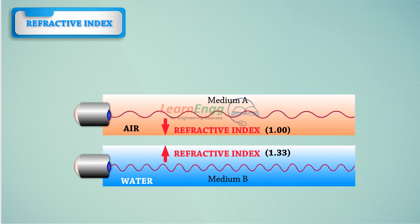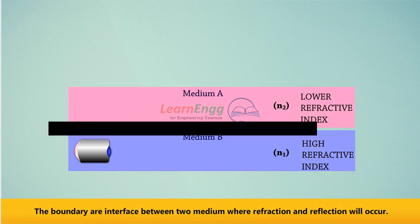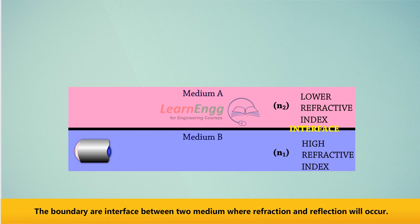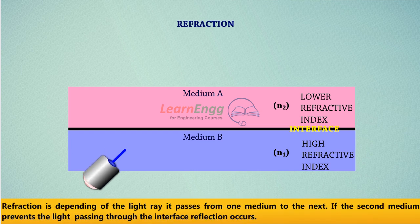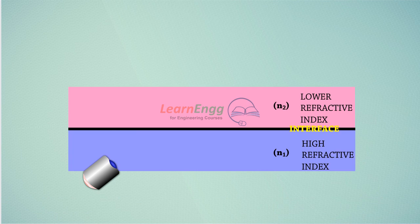A ray propagating through water will travel at a slower speed than in air. The boundary or interface between two mediums is where refraction and reflection will occur. Refraction depends on the light ray. It passes from one medium to the next. If the second medium prevents light from passing through the interface, reflection occurs.